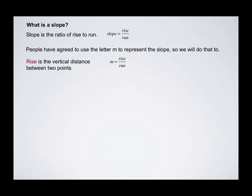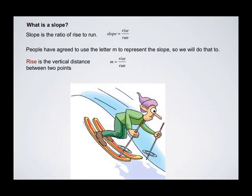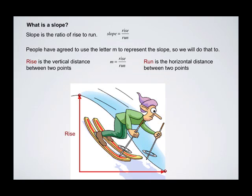Rise is the vertical distance between two points. So if we have a skier on a hill, the vertical distance between the top and the bottom is given by the straight line going perfectly vertical from the bottom to the top. That's our rise. The run is the horizontal distance between the two points, going from the point on the left to the point on the right. That's our run.